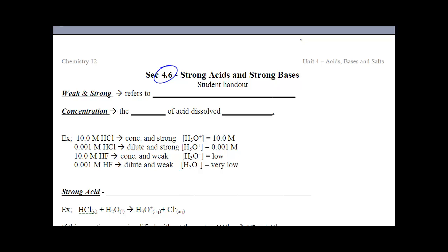First off, strong and weak refer to the percent they ionize. Or, concentration refers to the moles dissolved in a certain volume, like liters. So, whether you're weak or strong is how much you ionize. Weak ones ionize very little, strong ones ionize a lot. And concentration is moles per liter. That's big M.